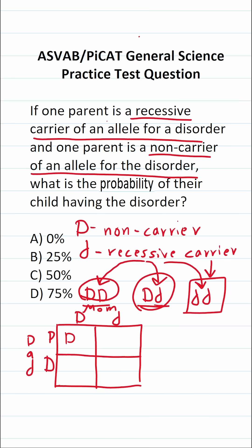In the first box, we have big D from the dad and big D from the mom — this person is a non-carrier of the disorder. In the second box, we get big D from the dad and little d from the mom — this person is a recessive carrier, but they do not have the disorder themselves. In the third box, big D from the dad and big D from the mom — again a non-carrier. In the fourth box, big D from the dad and little d from the mom — this person is a recessive carrier of the allele for the disorder, but they do not have the disorder themselves.